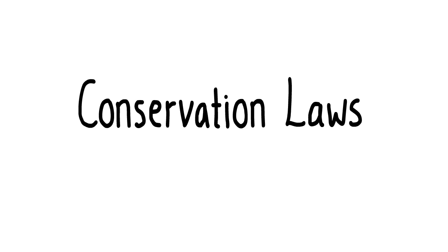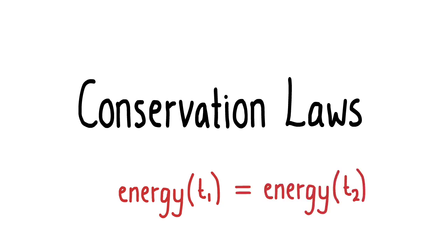Conservation laws are rules in physics that tell us that a particular quantity of a closed system remains the same over the course of time. For example, the total energy of a closed system at time t1 must equal the total energy at time t2, even if within that time the energy is being converted from one form to another.